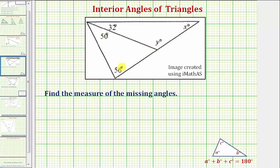Notice in our diagram we actually have three triangles. We have one smaller triangle here, another smaller triangle here, and then also a large triangle here.